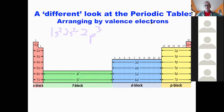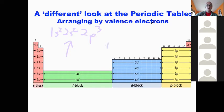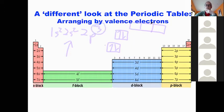So nitrogen has seven electrons. When we make an orbital diagram — as opposed to the electron configuration which just tells you how many electrons — the orbital diagram shows exactly where the electrons are. So we have 1s2, 2s2, and 2p3. We start adding electrons one at a time: one, two, three, four. Then P has three orbitals. So how do we put the three P electrons in?